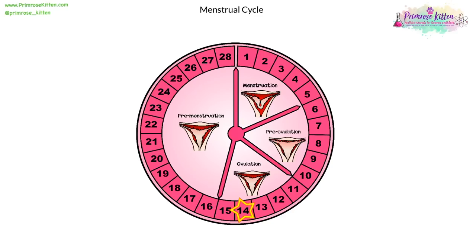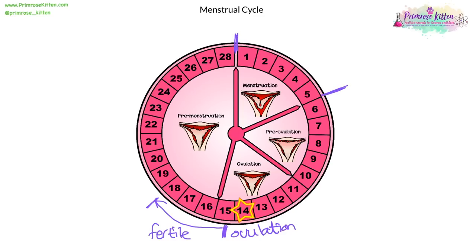This is the menstrual cycle in women. It lasts an average of 28 days, but in reality it could be as much as six weeks or as little as two weeks. Halfway through the cycle is a little event called ovulation — that is the point where the egg is released into the oviduct. The egg then travels from the oviduct for a couple of days, and the most fertile period for women is just after ovulation to two or three days after ovulation.